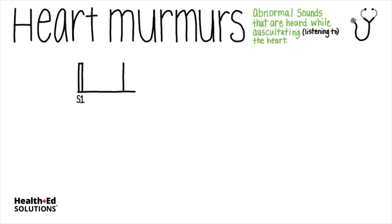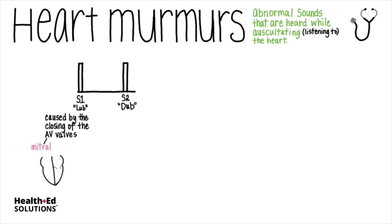S1 is called lub, and S2 is known as dub. S1 is caused by the simultaneous closing of the AV valves — the mitral valve and the tricuspid valve. The closing of the AV valves marks the start of systole and blood ejection from the ventricles into the great arteries.